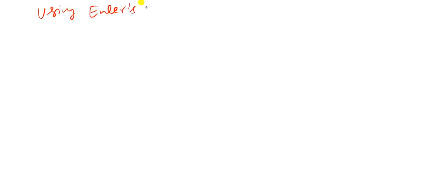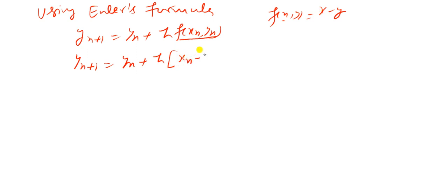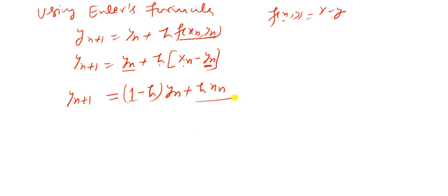Using the Euler's formula y_{n+1} = y_n + h * f(x_n, y_n), and since f(x, y) = x - y, replacing x with x_n and y with y_n gives f(x_n, y_n) = x_n - y_n. Rearranging: y_{n+1} = y_n + h(x_n - y_n) = (1 - h) * y_n + h * x_n. This is equation 2.